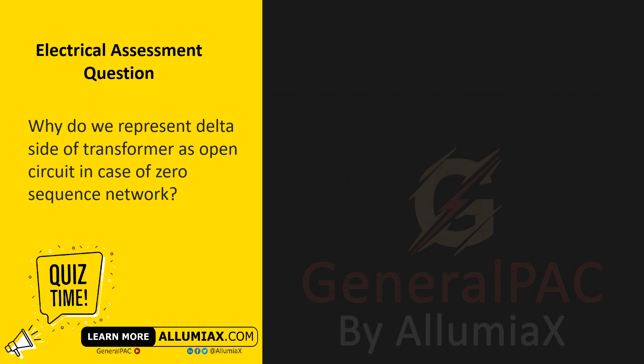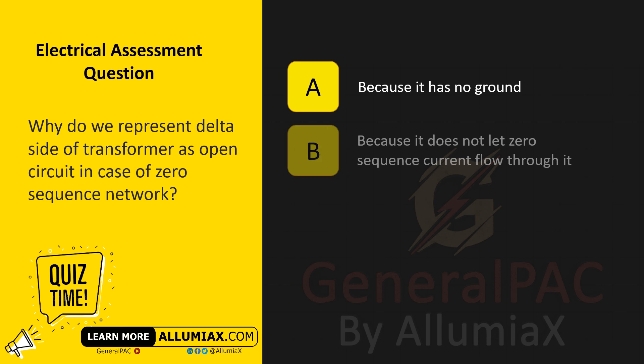Why do we represent the delta side of a transformer as an open circuit in the case of a zero-sequence network? A. Because it has no ground. B. Because it does not let zero-sequence current flow through it. C. Both.